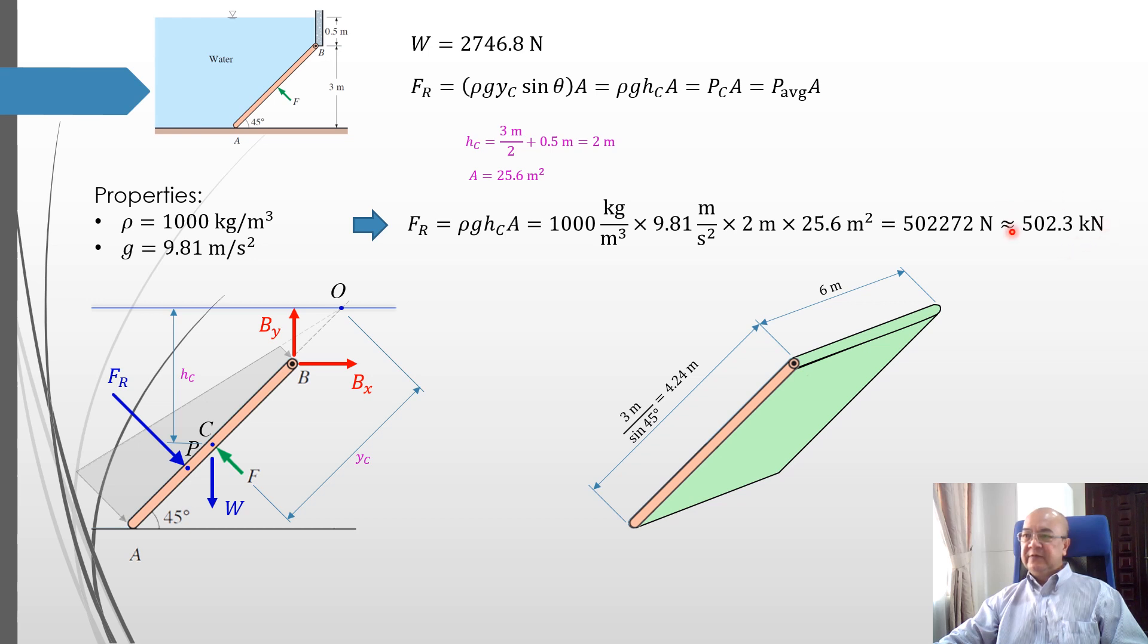What we observe here is that this value is much bigger compared to the weight. This is 502.2 kilonewton. This is 2.7 kilonewton only.